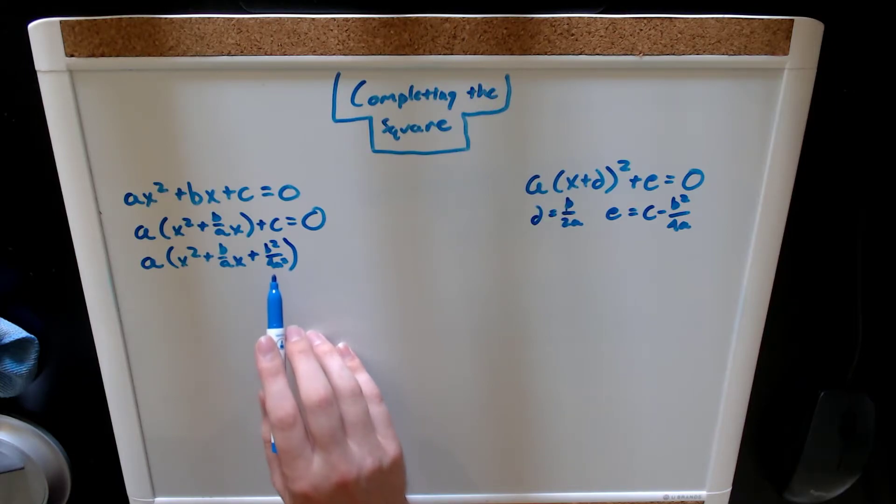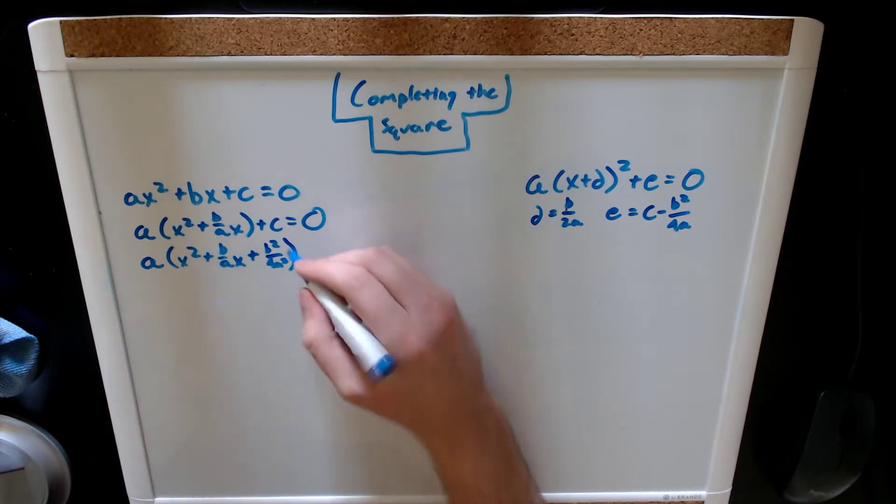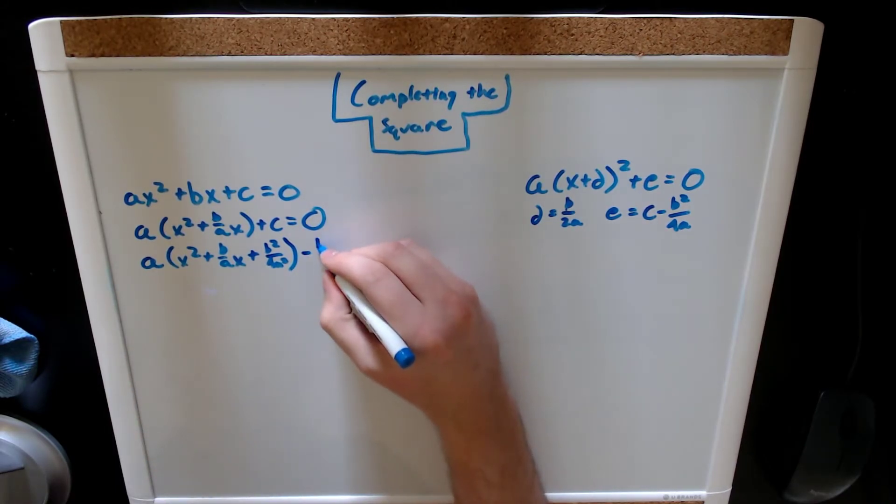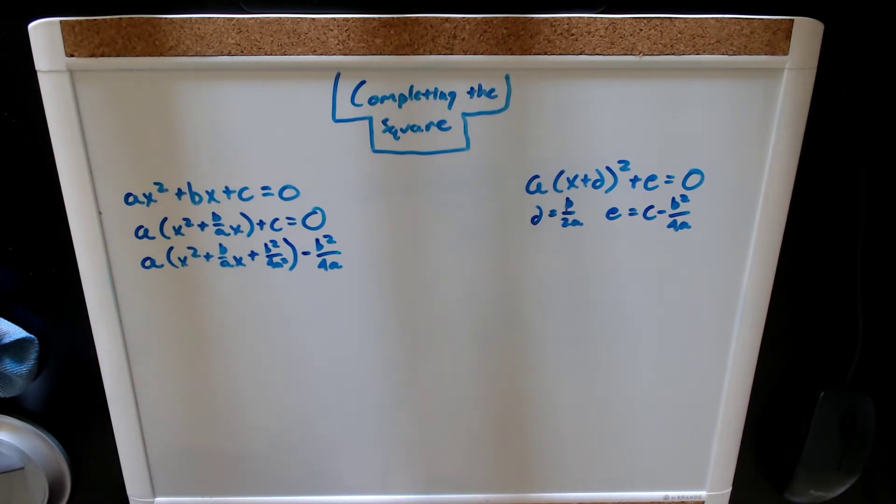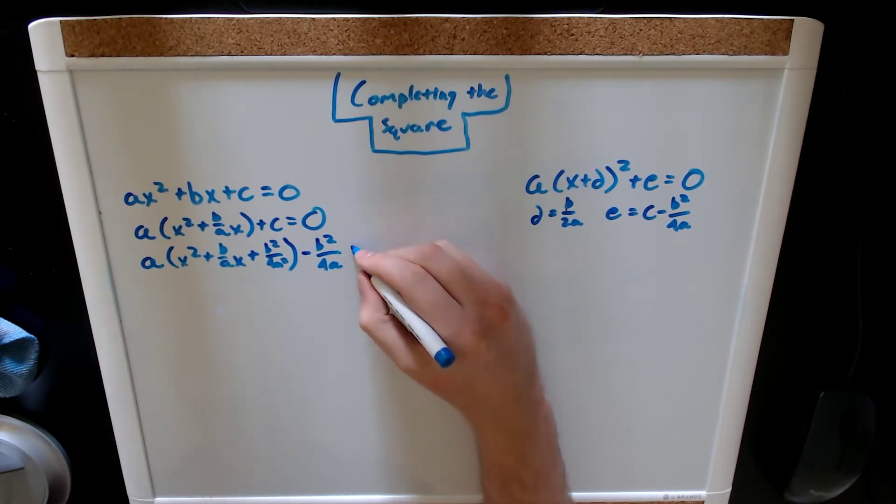However, we can't just subtract b squared over 4a squared, because that's not what we added. We added b squared over 4a squared times a. So, if we want to subtract that out, we need to subtract out b squared over 4a. Then, we can bring down our c and set it equal to zero.